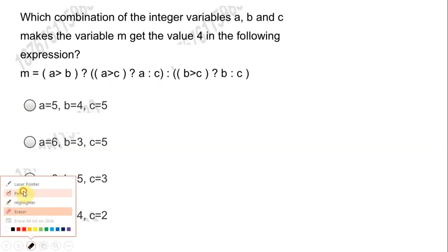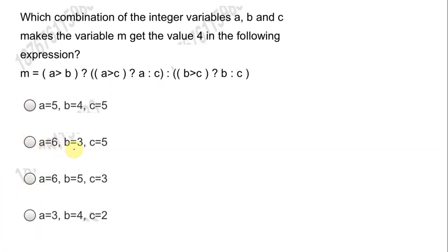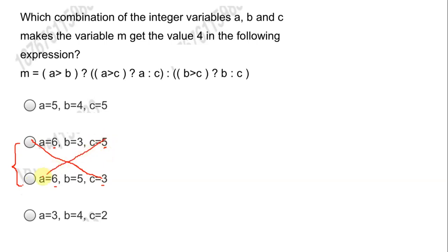Let us consider option 2: a=6, b=3, c=5. If a is greater than c it returns 6, otherwise 5. If b is greater than c, that condition is false, so it returns c which is 5. Looking at option C as well, there is nowhere the value 4 present within options B or C, so we can directly eliminate both those options.